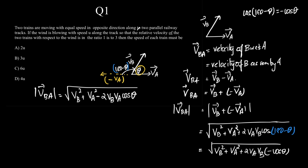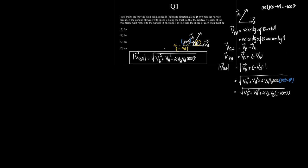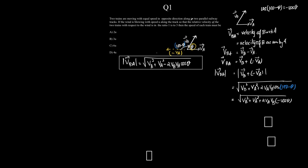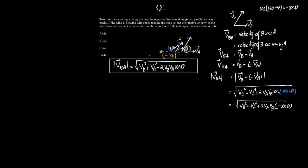So the modulus of relative velocity of B with respect to A is: √(V_B² + V_A² − 2·V_B·V_A·cos θ). This is our expression for the relative velocity of two vectors. Now let us apply this formula to find the relative velocity in particular cases.